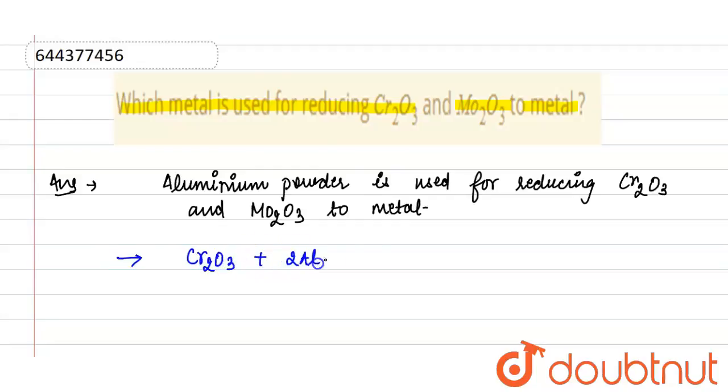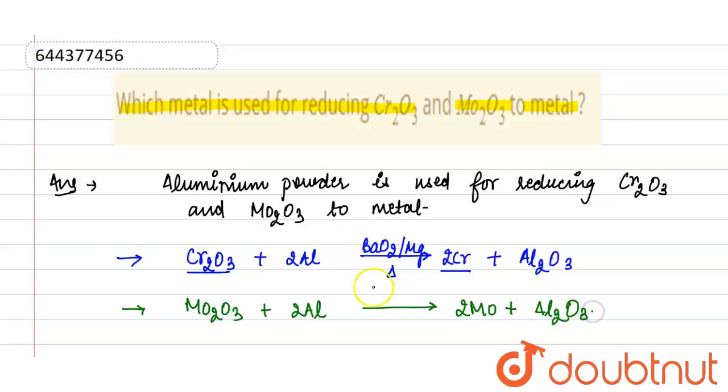So here Cr2O3 is reduced to Cr in the presence of aluminum. Second, Mo2O3 in the same way will give 2Mo plus Al2O3. So here aluminum powder is used. Thank you.